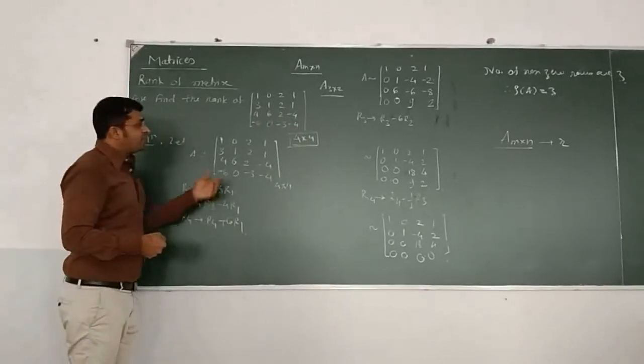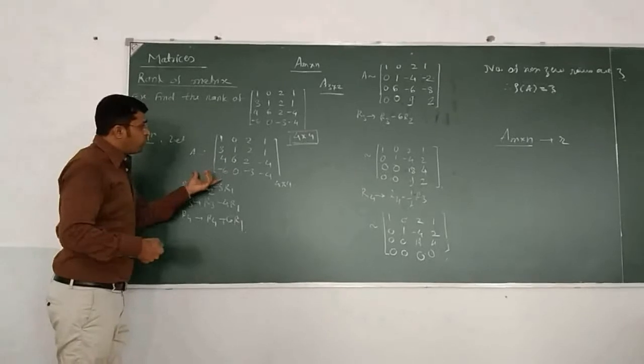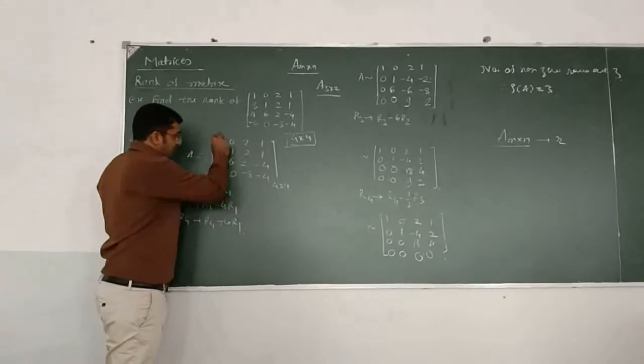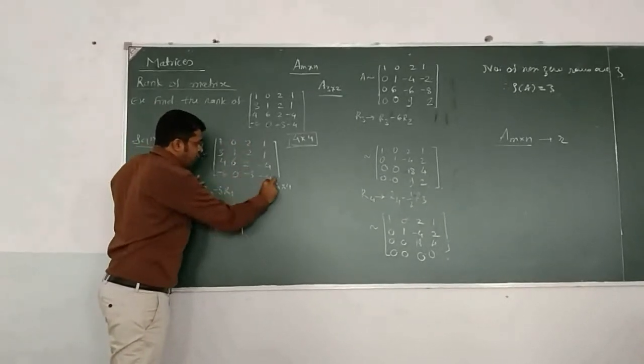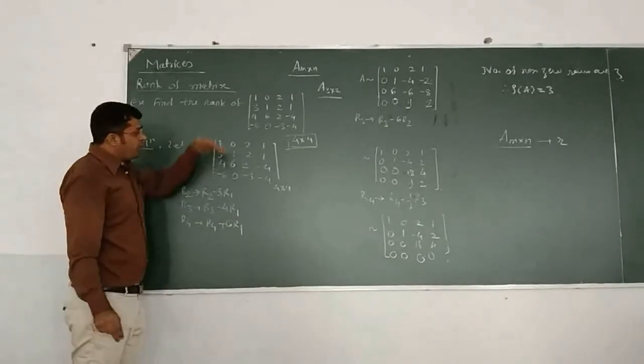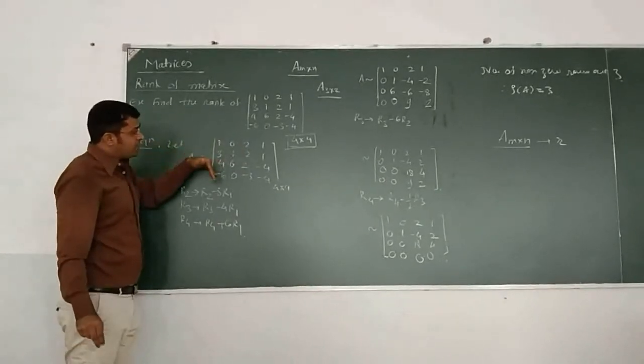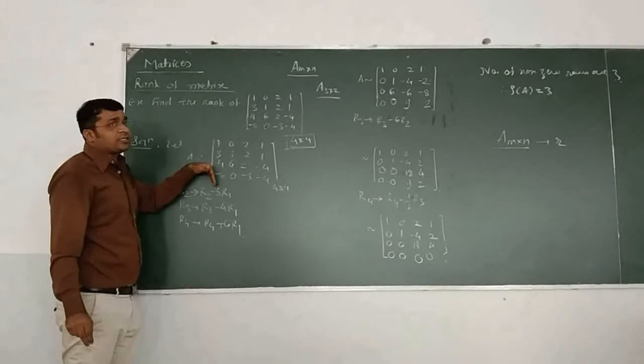Now we are finding the rank here. For that, what we do? This is the 4 by 4 matrix and this is the principal diagonal. We find out all the elements below the principal diagonal as 0.